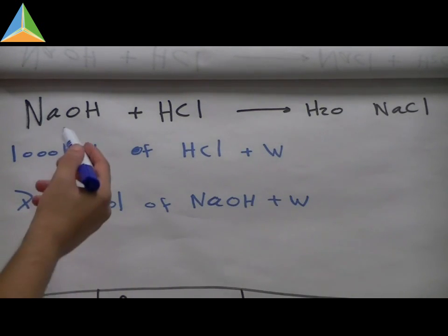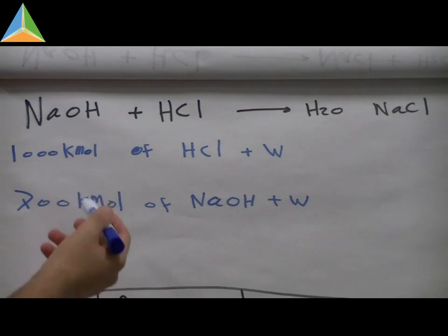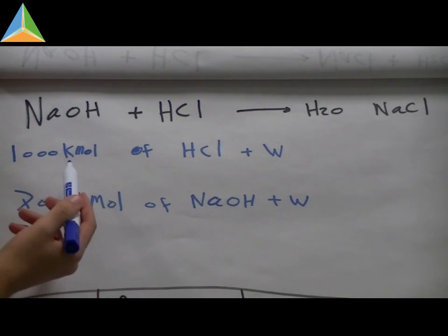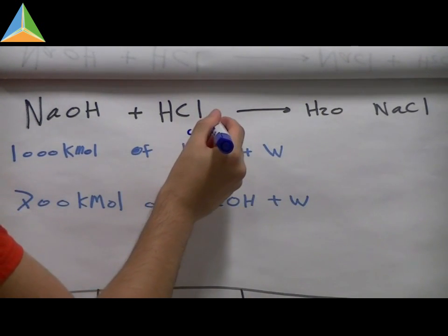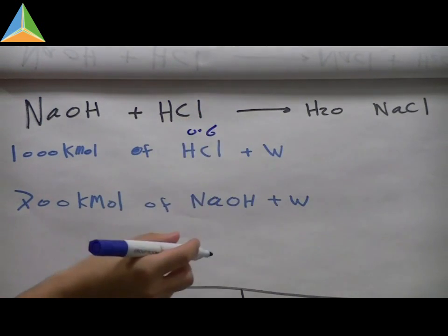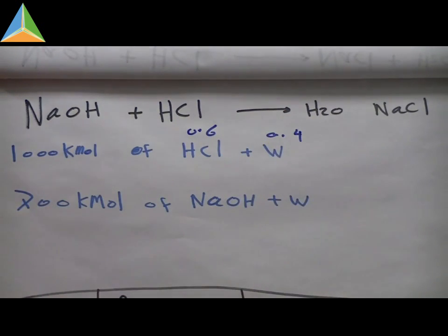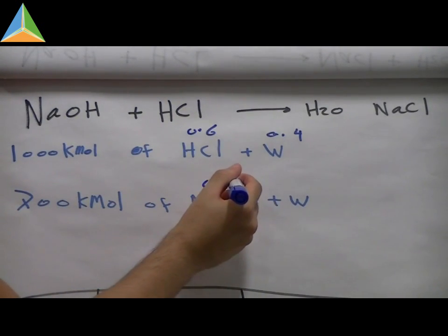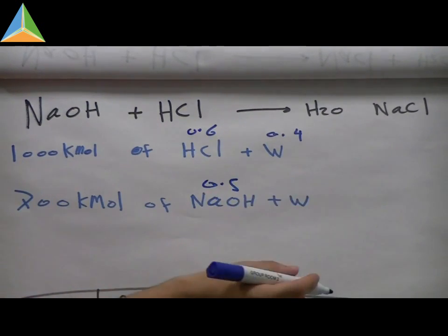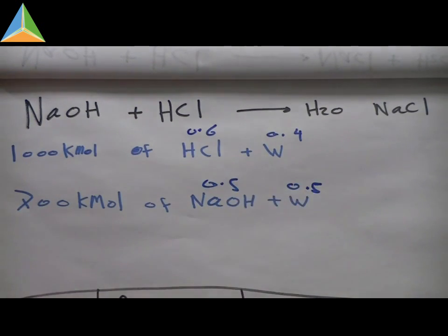So here we have this balance equation. We get the amount of feed, which is 1000 kmol of HCl plus water. We know here it's 0.6 mole fraction of HCl, and it's going to be 0.4 mole fraction of water. Here we also know it's 0.5, so the water is going to be 0.5 mole fraction.